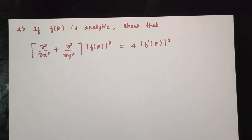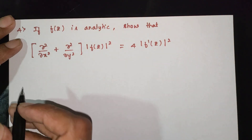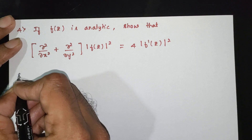In the next question, if f of z is analytic, show that the Laplacian operator (∂²/∂x² + ∂²/∂y²) applied to |f(z)|² is equal to 4 times |f'(z)|².